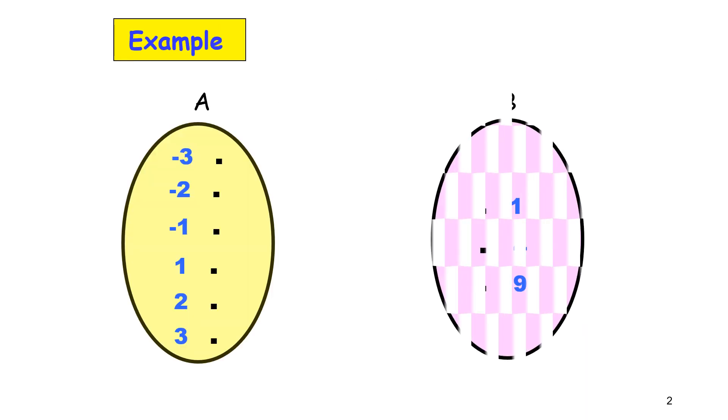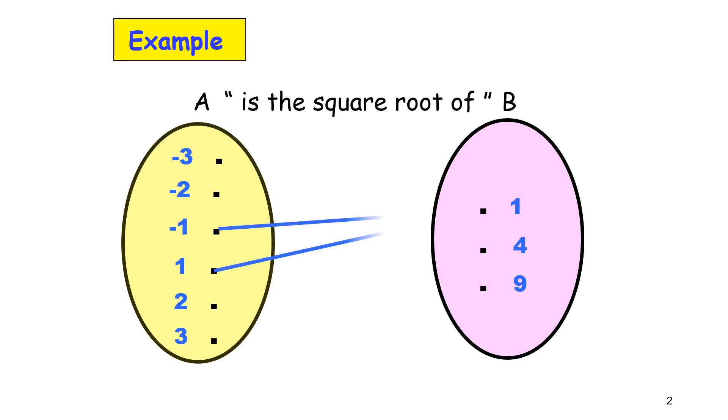Example. Negative 1 and 1 is the square root of 1. Negative 2 and 2 is the square root of 4. Negative 3 and 3 is the square root of 9.